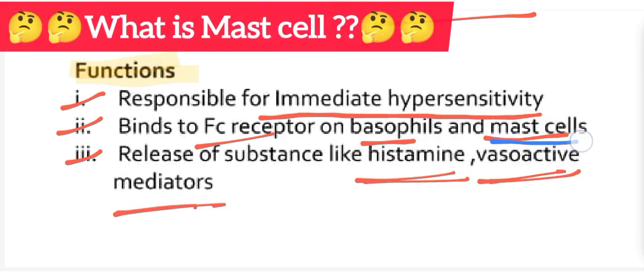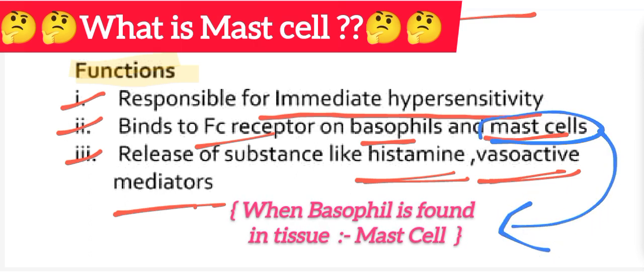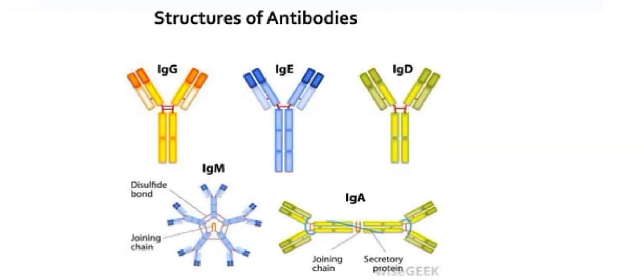Do you know what is mast cell? When basophil is found in tissue, it is called mast cell. Here are the structures of the five antibodies. This is IgG, this is IgE, IgD, IgM, and IgA.